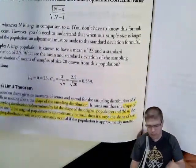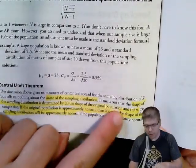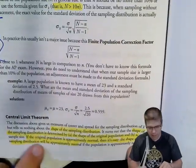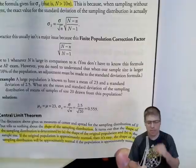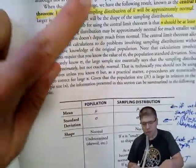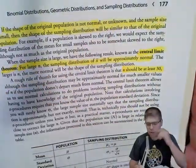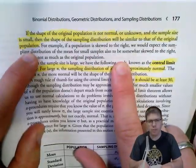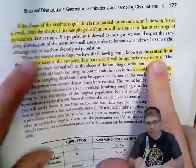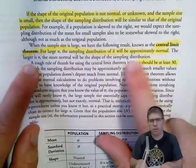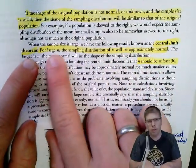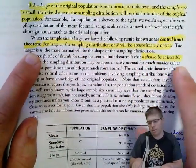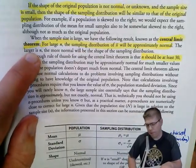For the shape of the sampling distribution: if the original population is approximately normal, the sampling distribution will also be approximately normal. If the population shape is unknown and the sample size is small, the sampling distribution will look similar to the original population. But if we have a large sample size, we get to use the Central Limit Theorem — with n at least 30, the sampling distribution will be approximately normal, and larger is always better.